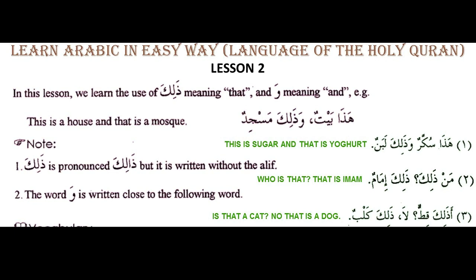Let's look at the example: hada baithun — this is a house. Wa dalika masjidun — and that is a mosque.